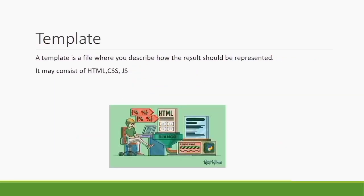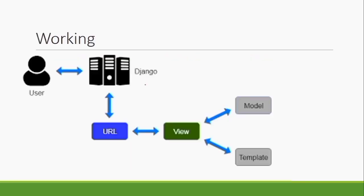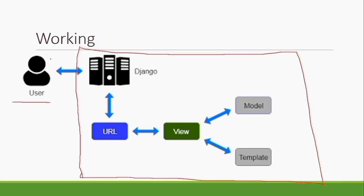Next is Template. A template is a file where you describe how the result should be presented to the user. It will consist of your HTML, CSS, or JavaScript depending upon your application. To understand the flow: whenever the user hits a particular URL — say www.wikipedia.com, where the server is built with Django — it will hit the Django server, check whether the URL is valid, and if so, call the view attached to that URL. All the business logic will be written in the view — like when you purchase something from Amazon and keep adding items to your cart, all that addition and calculation logic is written in the view.